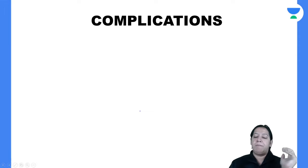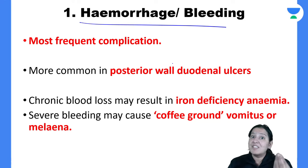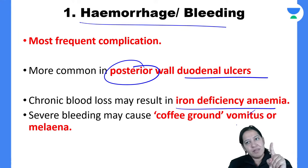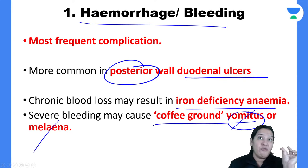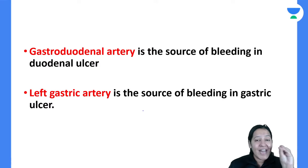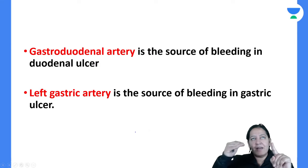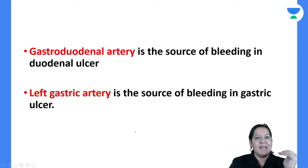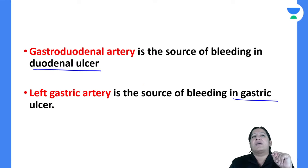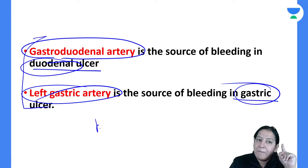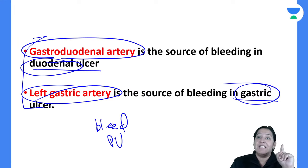Coming on the complications of peptic ulcer. There are three complications. The most common complication is hemorrhage or bleeding. Ulcers bleed; the bleeding either comes in vomiting as hematemesis or in stool as melena, leading to iron deficiency anemia. In duodenal ulcer the bleeding artery is the gastroduodenal artery; in gastric ulcer it is the left gastric artery. These are two important MCQs. Submucosa contains arteries, and the ulcer degrades them, causing bleeding.